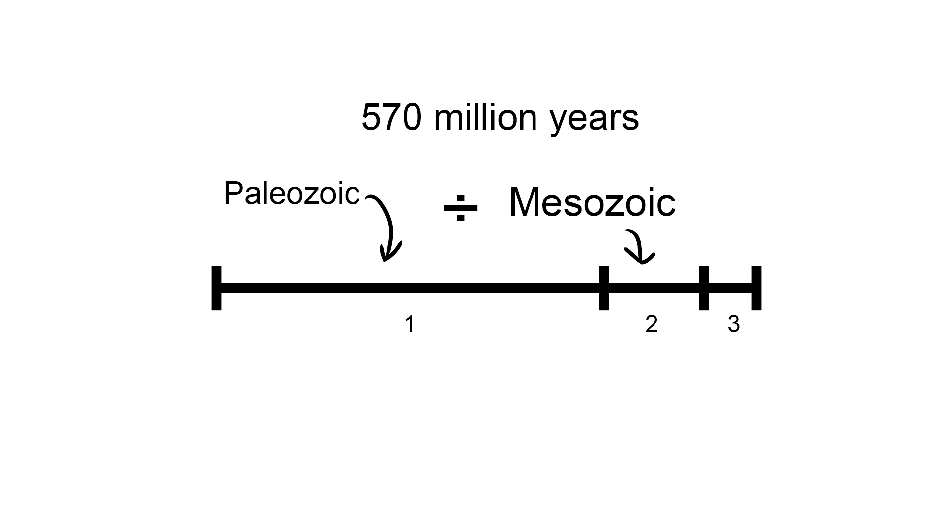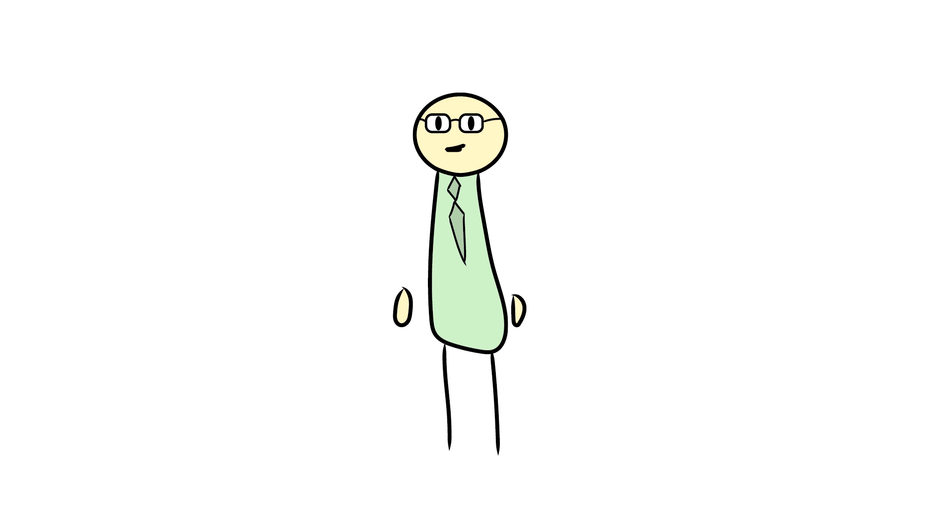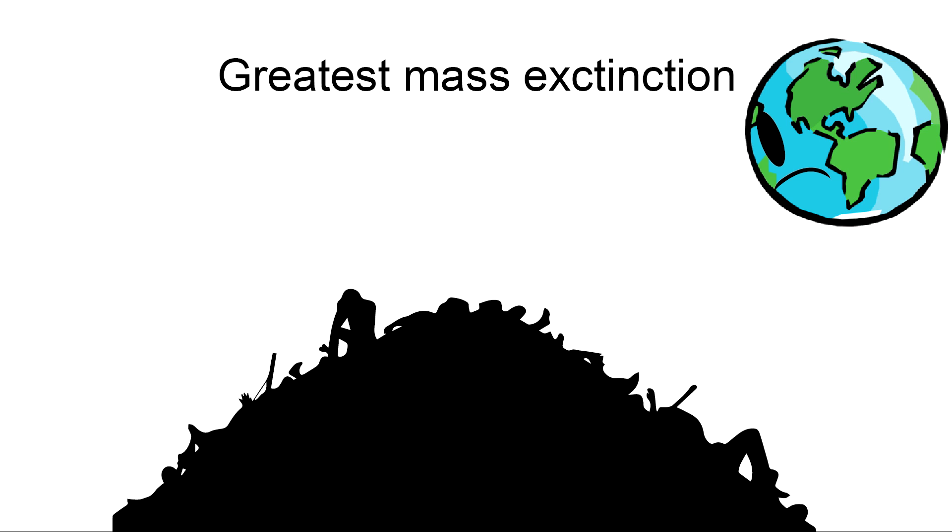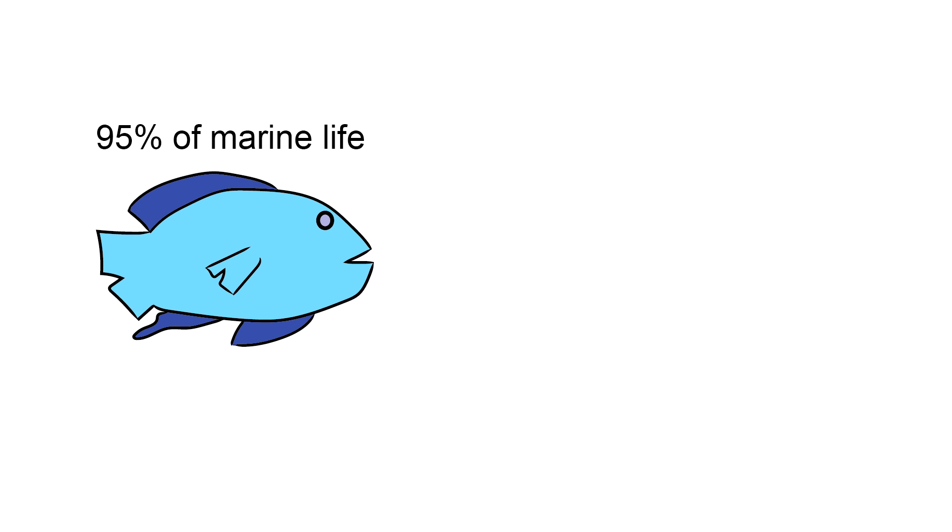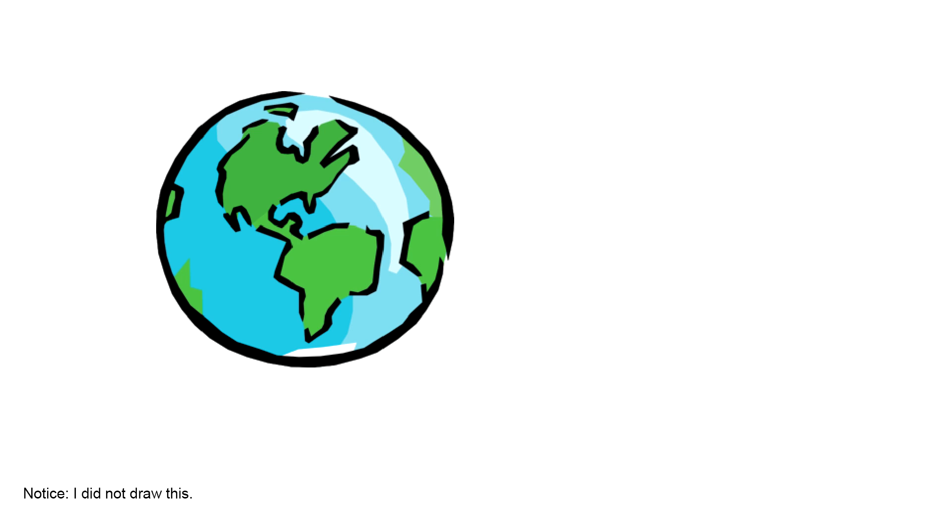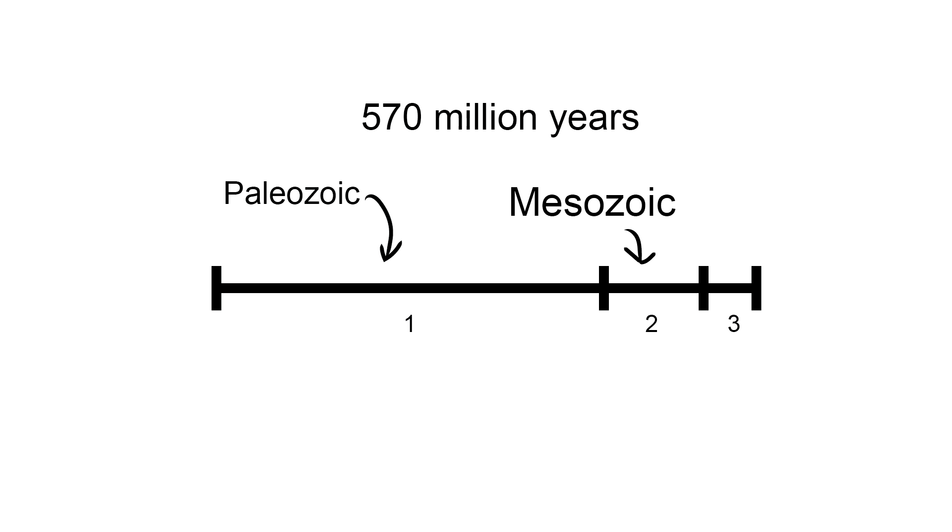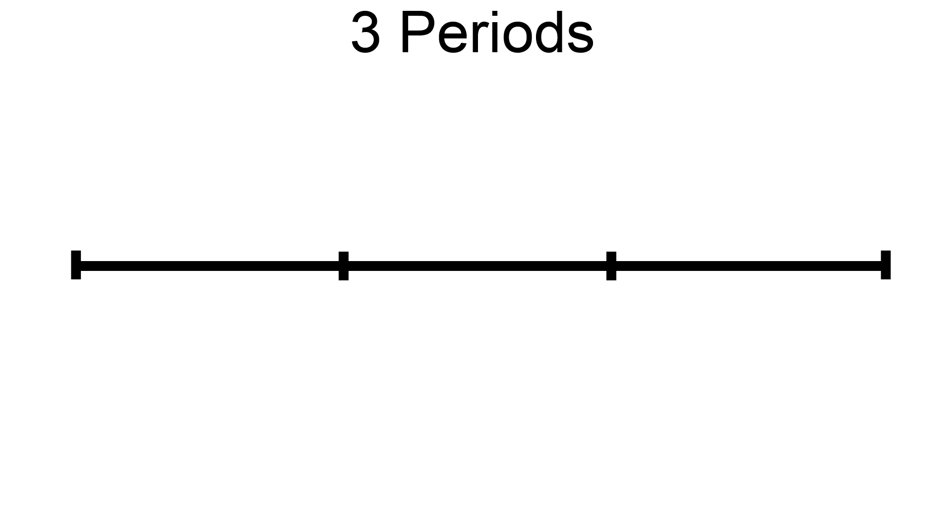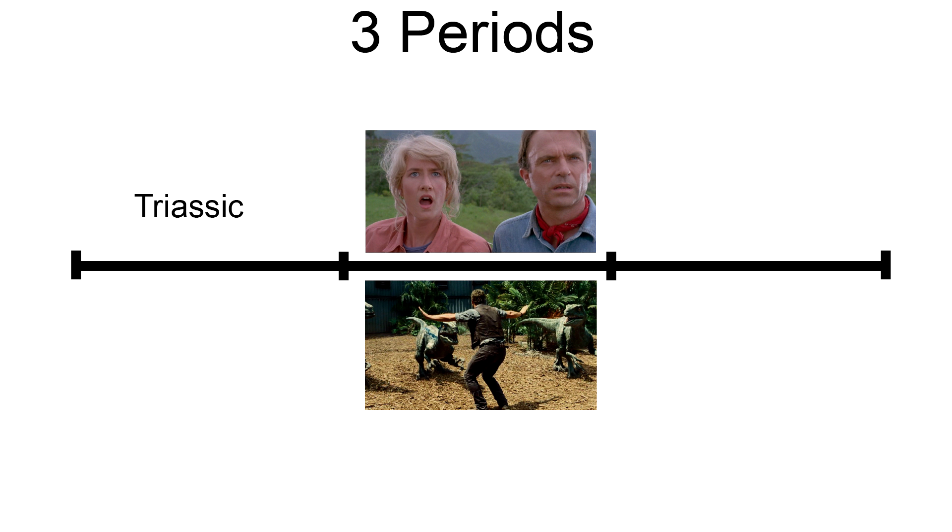There was an event that marked the division of these two eras. The event that split both of these eras was the greatest mass extinction that the Earth has ever seen. It wiped out 95% of marine life and 70% of land life, allowing dinosaurs to be the lords of the Earth. The Mesozoic Era was also known as the Age of Dinosaurs. This era was divided into three periods: Triassic, Jurassic, and Cretaceous.